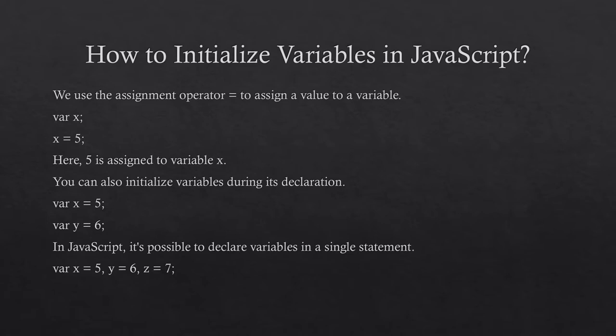We use the assignment operator equals to assign a value to a variable: var x; x = 5 — here 5 is assigned to variable x. You can also initialize variables during declaration: var x = 5, var y = 6. In JavaScript it's possible to declare variables in a single statement: var x = 5, y = 6, z = 6.